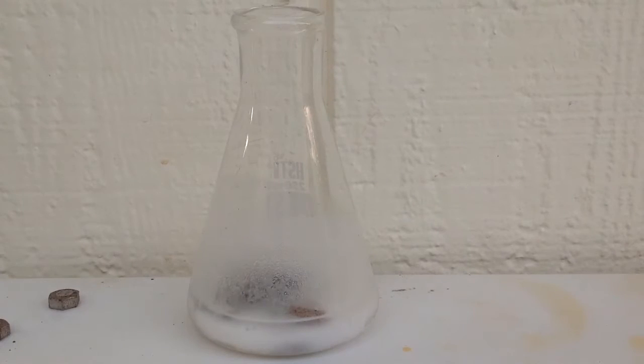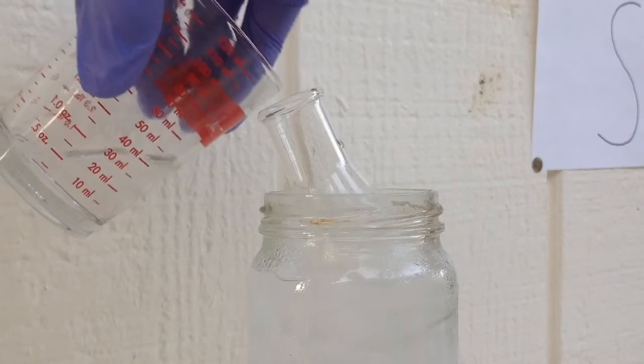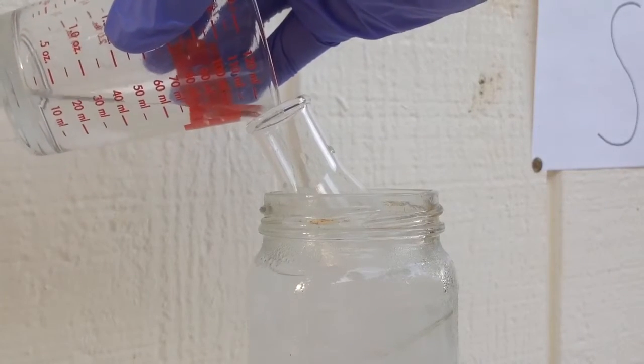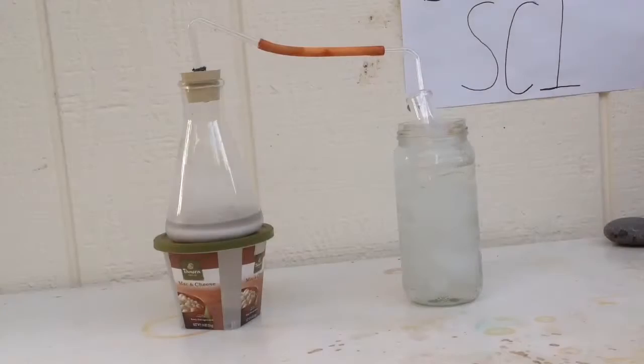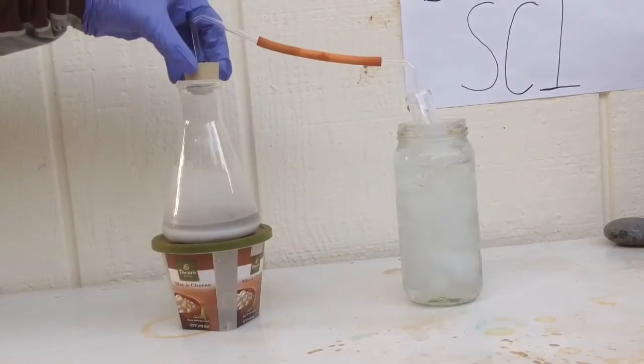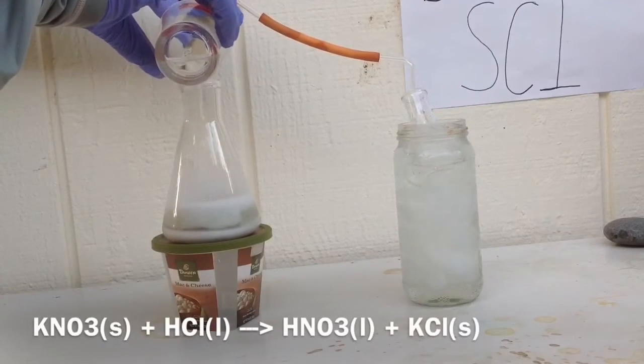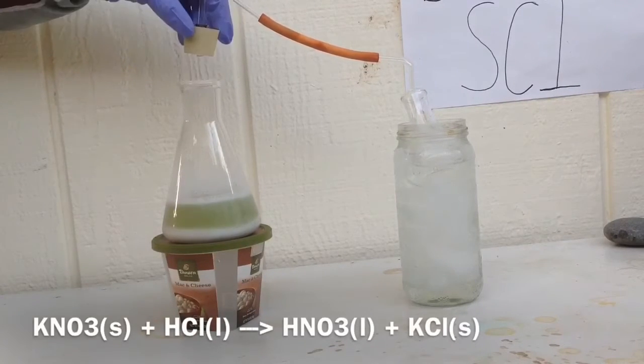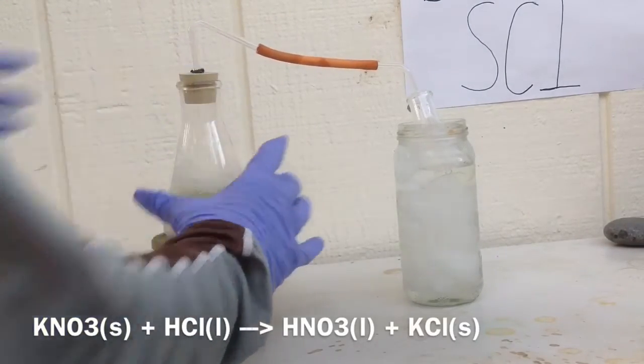Now add the 19 milliliters of hydrogen peroxide and add the hydrochloric acid.